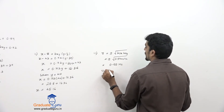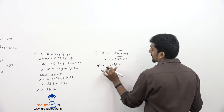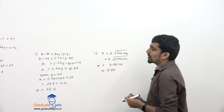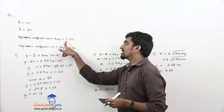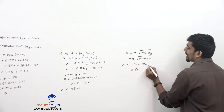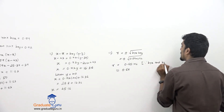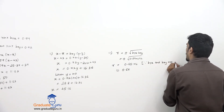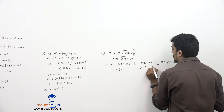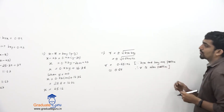So r ≈ 0.65. Since byx and bxy are both positive, therefore r is also positive. With this, question 4 is done.